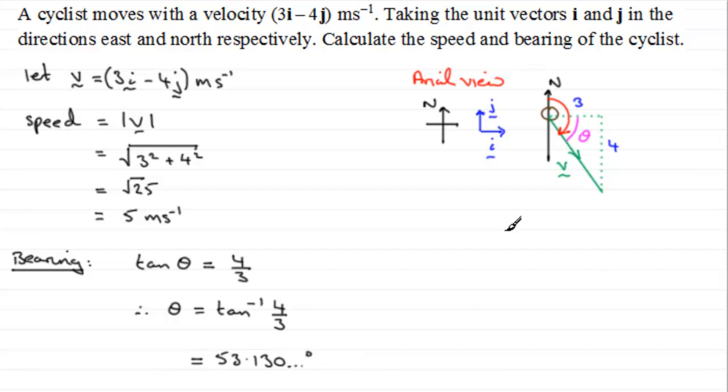Now to get the bearing all we've got to do then is just take this angle here. We can go to the dotted line here, that's going to be 90 degrees plus theta. So therefore we can say that the bearing equals 90 degrees plus theta, theta being 53.130 and so on degrees. If we add those two together we get 143.130 and so on. And normally we give bearings to the nearest degree, so this would be 143 degrees. And we'll just put the accuracy here as being measured to nearest degree.